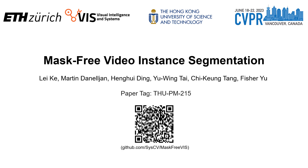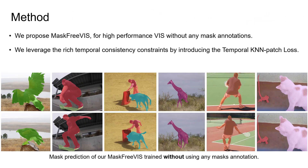We present our work Mask-Free VIS at CVPR this year for annotation-efficient video instance segmentation. Video masks are tedious and expensive to annotate, limiting the scale and diversity of existing VIS datasets. We show the video instance segmentation results of our Mask-Free VIS, trained without using any video or image mask annotation. By achieving a remarkable 42.5 mask AP on the YouTube VIS Val dataset with the ResNet-50 backbone, our approach demonstrates that high-performing VIS can be learned even without any mask annotations.